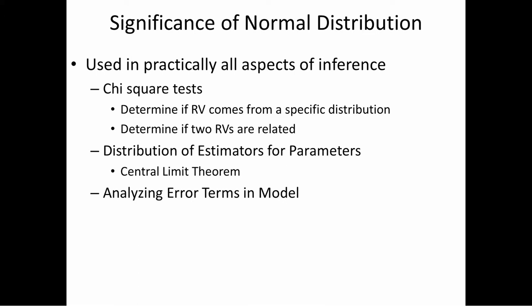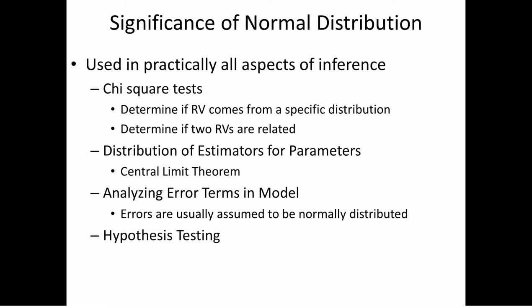We're also going to be analyzing error terms in models. When we set up models, we have to make sure that the error terms satisfy a number of conditions, and one of those conditions is that the errors have to be normally distributed. The normal distribution plays a central role because we have to check if the errors follow a normal distribution. Finally, we'll see through the central limit theorem how hypothesis testing uses the normal distribution.